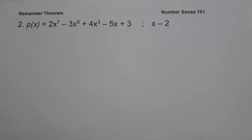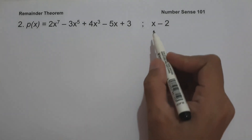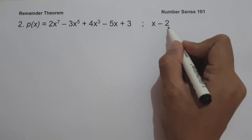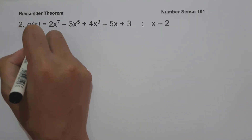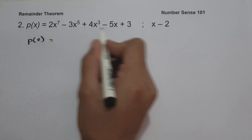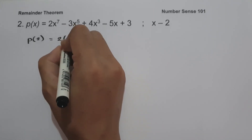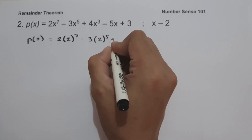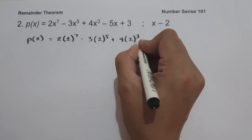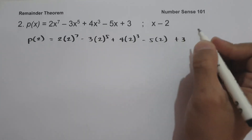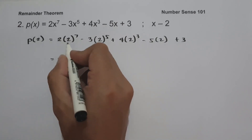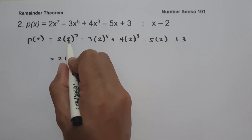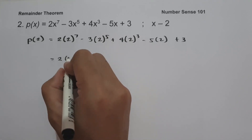On example number 2, we have p of x equals 2x raised to 7 minus 3x raised to 5 plus 4x cubed minus 5x plus 3, and our divisor is x minus 2. Let us substitute 2 to the values of x. We compute 2 raised to 7 by multiplying 2 seven times, and that is 128.